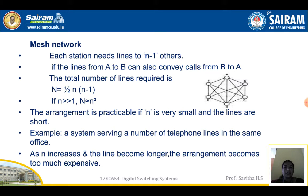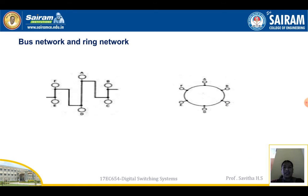The arrangement is practicable if N is very small and the lines are short. For example, a system serving a number of telephone lines in the same office. As N increases and the lines become longer, the arrangement becomes too expensive.